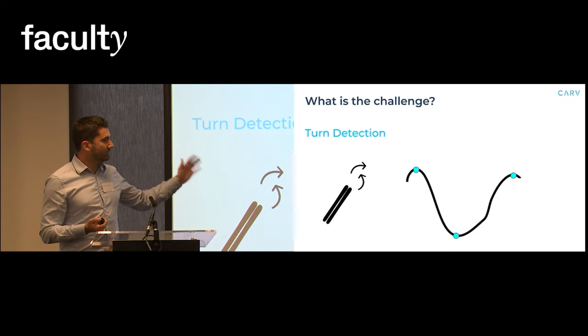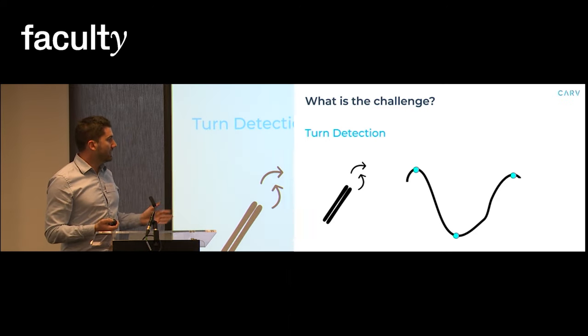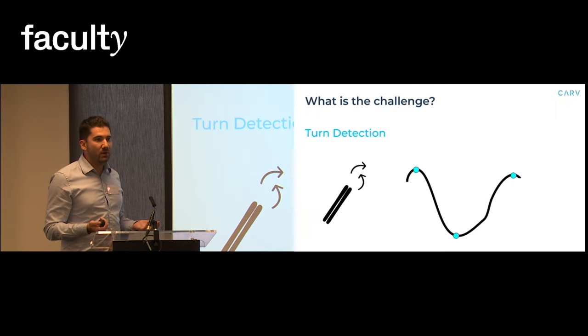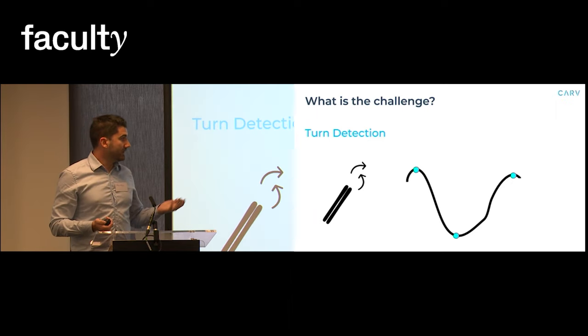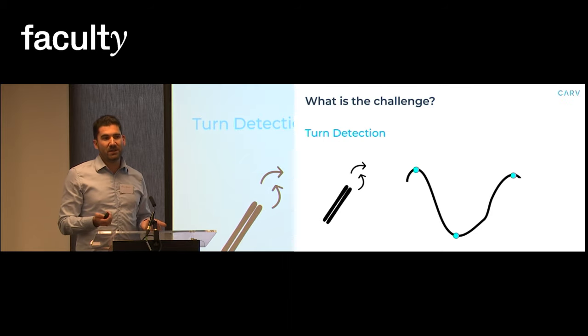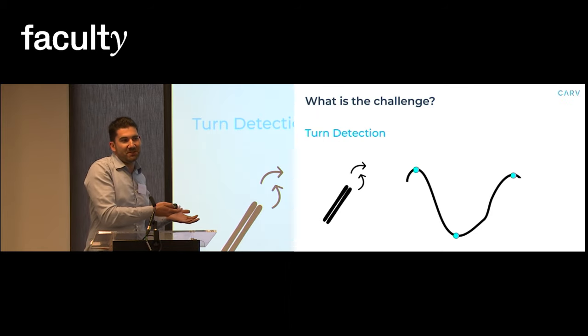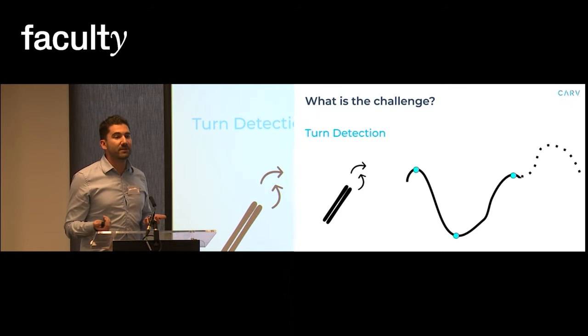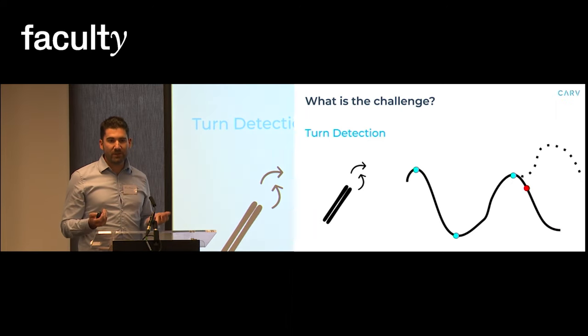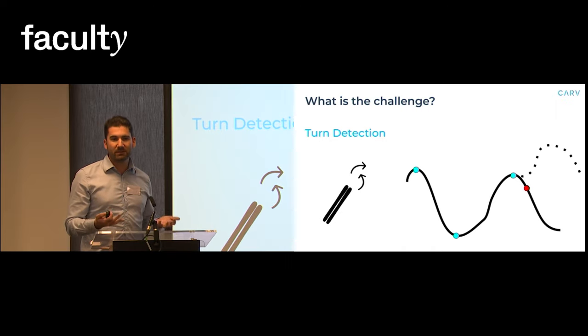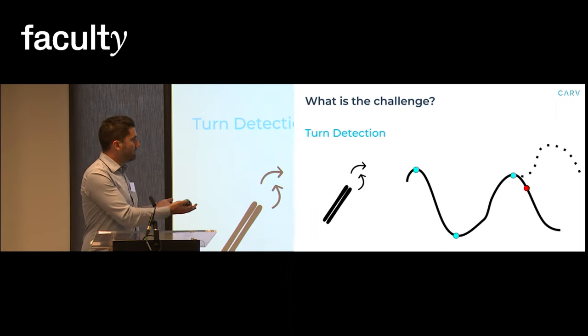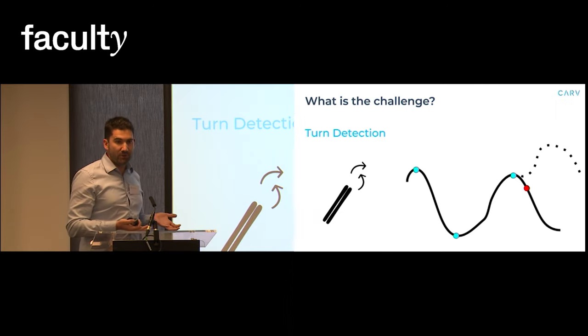If you look at the very right end of this line, is that a turn? Well the line certainly goes down but what could actually be is that it's just a sloppy skiing style and the skier is actually still in the middle of a turn. This is why the CARV engine has to wait until more data comes in to be actually accurately able to classify a turn.